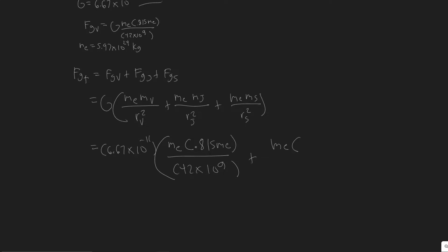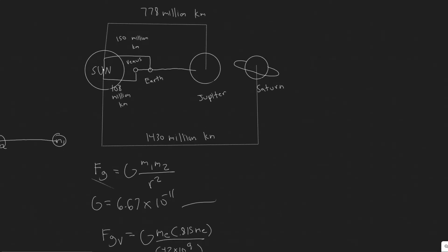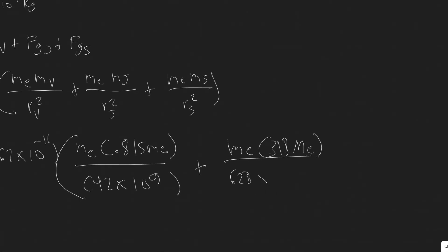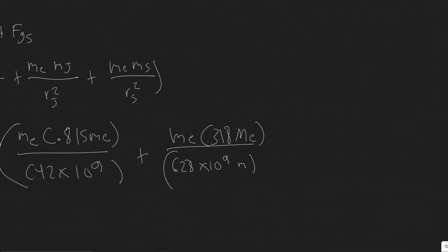For Jupiter: the mass is 318 Me. The distance between Jupiter and Earth is 778 − 150 = 628 million kilometers. Converting: 628 × 10⁶ km × 10³ = 628 × 10⁹ meters. So the Jupiter term is Me × 318 Me divided by (628 × 10⁹)².